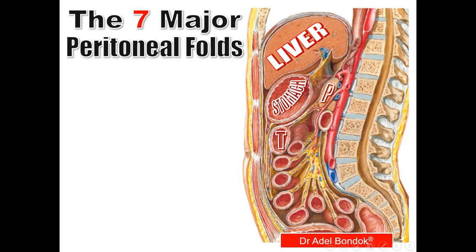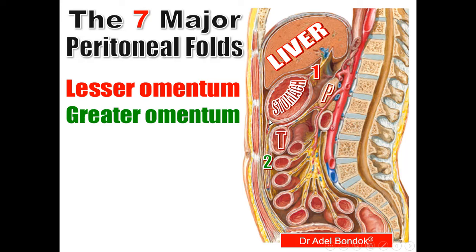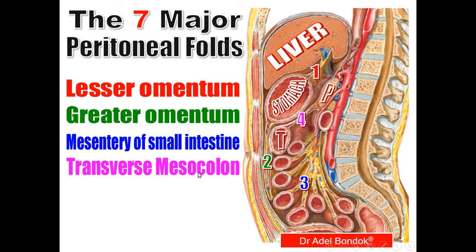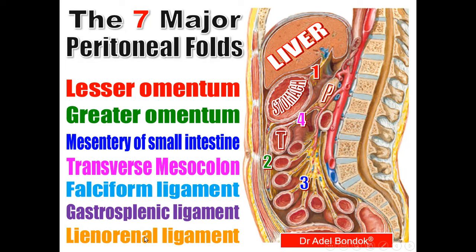We have seven major peritoneal folds. The first is the lesser omentum between the liver and the stomach, also called the gastrohepatic ligament. The second is the greater omentum connecting the stomach with the transverse colon, also called the gastrocolic ligament. The third is the mesentery of the small intestine between the small intestine and the posterior abdominal wall. Then the transverse mesocolon and sigmoid mesocolon, the falciform ligament between the liver and the anterior abdominal wall, the gastrosplenic ligament between the spleen and the stomach, and the lienorenal ligament between the spleen and the kidney.